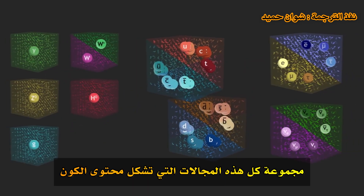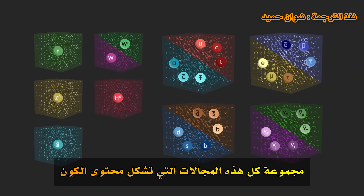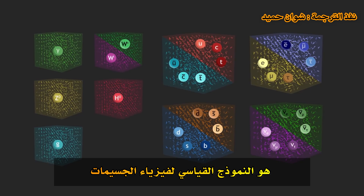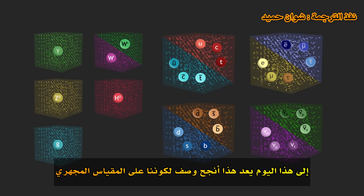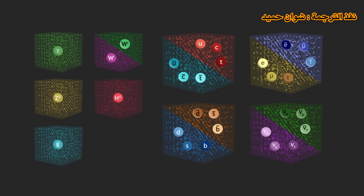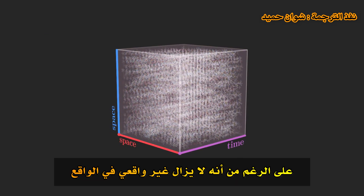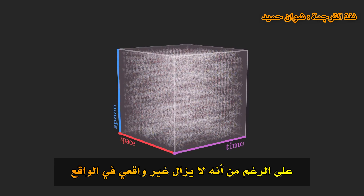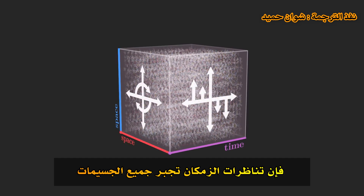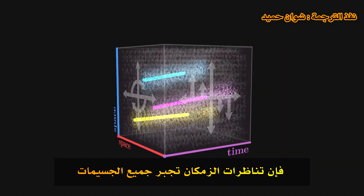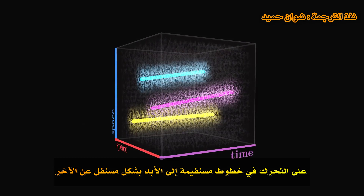The set of all these fields that make up the content of our universe is the standard model of particle physics. To this day, this is the most successful description of our universe on the microscopic scale. Our model universe now contains the same particles as our real universe. However, it still isn't realistic. Indeed, the symmetries of space-time force all particles to move in straight lines forever, independently one from the other.